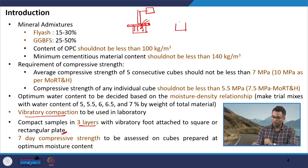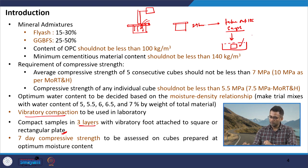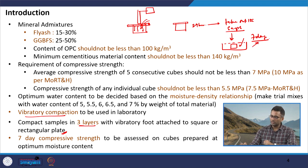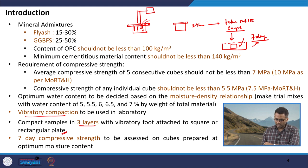Once the sample is prepared, on the first day it is covered with a wet gunny bag. After 24 hours, the sample is removed and conditioned in a water bath. DLC is designed for 7-day compressive strength, unlike regular concrete which uses 28-day strength. After 7 days, the sample is tested under a compressive testing machine to verify the strength is within desired limits.